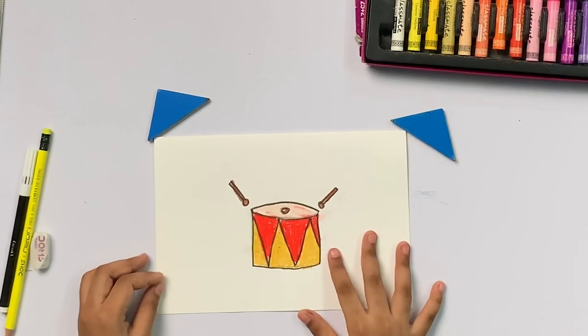And now our drum is done. Drum is a musical instrument. It is used at festivals and it is used in some songs. Thank you.